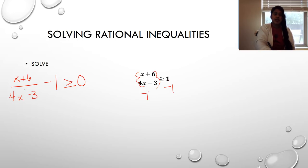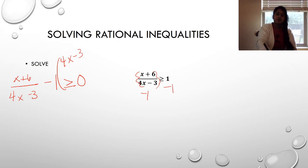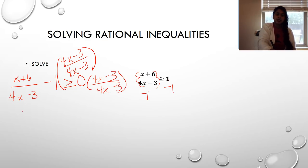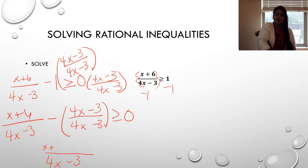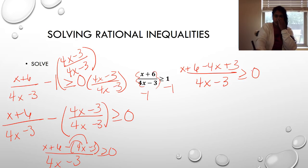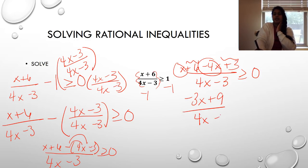Now I have a zero, but I still have two terms. I multiply the standalone −1 by (4x−3)/(4x−3) to get a common denominator. That gives me (x+6)/(4x−3) − (4x−3)/(4x−3) ≥ 0, which combines to one fraction: (x+6 − (4x−3)) over (4x−3) ≥ 0. Distributing the negative: x + 6 − 4x + 3 over (4x−3) ≥ 0.